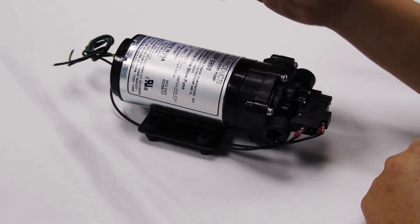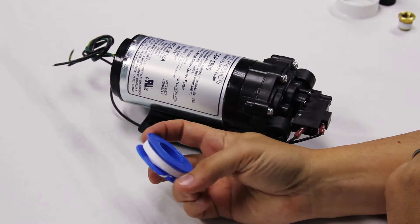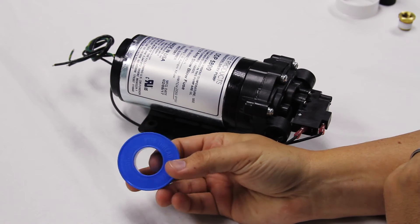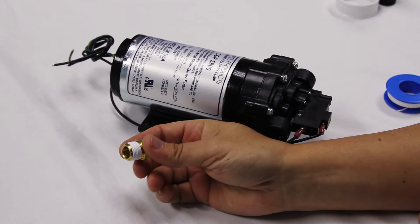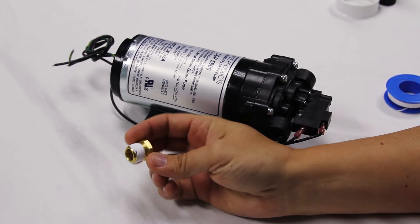So here's our standard pump. Now typically what we do is we'll go to a home improvement store, get some Teflon tape, and wrap our brass. If we're doing a brass to brass connection, this is great.